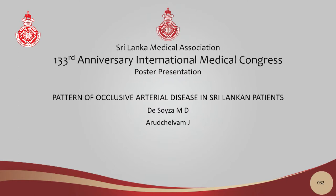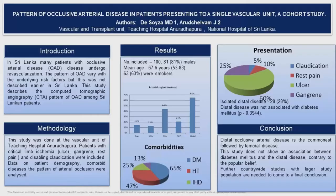Good afternoon everyone, and thank you for giving me the opportunity to do the poster presentation here. In our study, we have done the pattern of the occlusive arterial disease in patients at a teaching hospital, with around 100 patients. Me and my consultant, vascular surgeon Dr. Joel Arut Chalvam, during this study, have examined the risk factors and also who needs revascularization, including computed tomography angiograms.